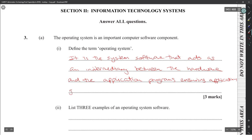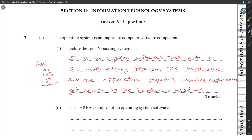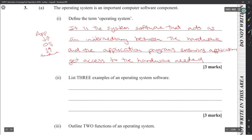Applications get access to the hardware they need. Basically, the OS is in the center — the hardware is below and the apps are above. The apps have to go through the OS to get to the hardware. The operating system manages all of that, though it manages other things too. When they say 'define the term operating system,' that covers a wide range.